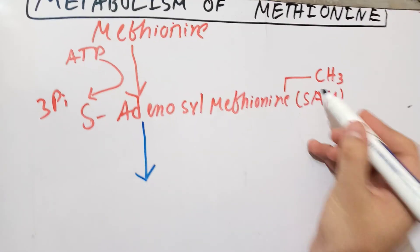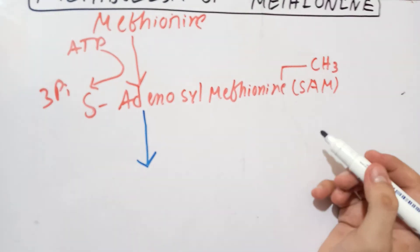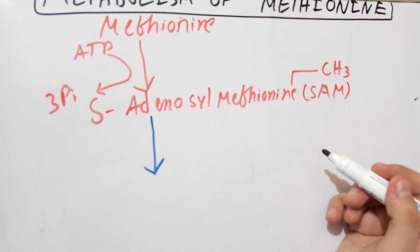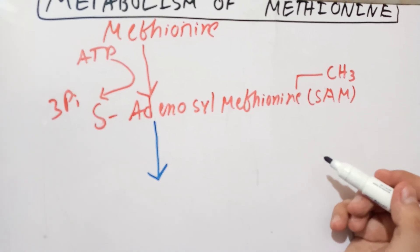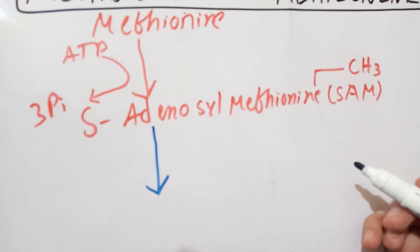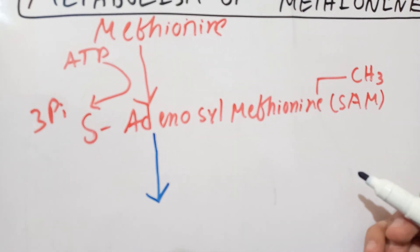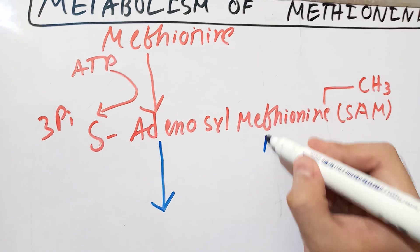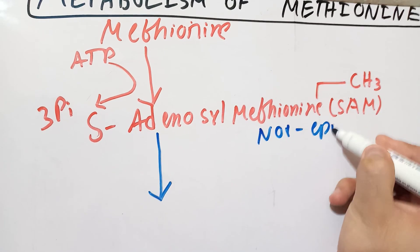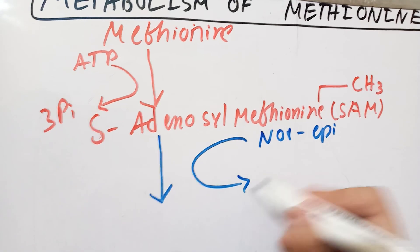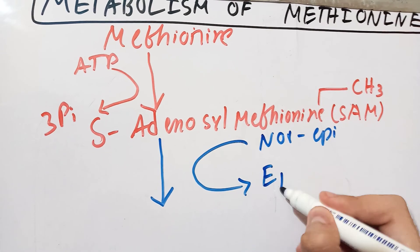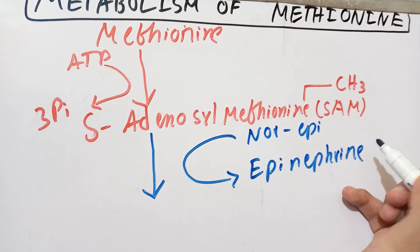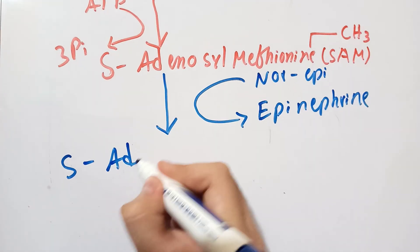There are donors, so there must be acceptors. One compound that accepts the methyl group from S-adenosyl methionine is in the formation of catecholamines — specifically, norepinephrine is converted into epinephrine. This reaction occurs in the suprarenal medulla, where the methyl group is donated to norepinephrine to convert it into epinephrine.